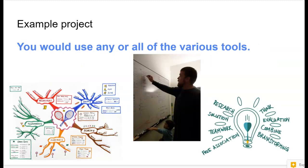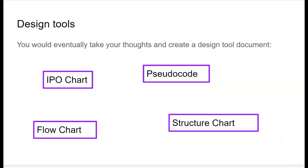In the design phase, you would use various tools such as mind mapping, brainstorming, and whiteboarding. You would eventually take your thoughts and ideas and create a design tool document. In a different video, we'll talk about the four different design tools: the IPO chart, pseudocode, flowchart, and structure chart.